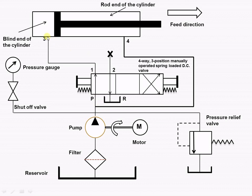The volume of fluid supplied to the blind end of the cylinder is greater than the pump flow rate, and therefore the speed of extension of the piston is greater than the retraction speed. This is known as regeneration. In this way, the regenerative circuit is used for increasing the speed of the piston in the forward or feed direction.